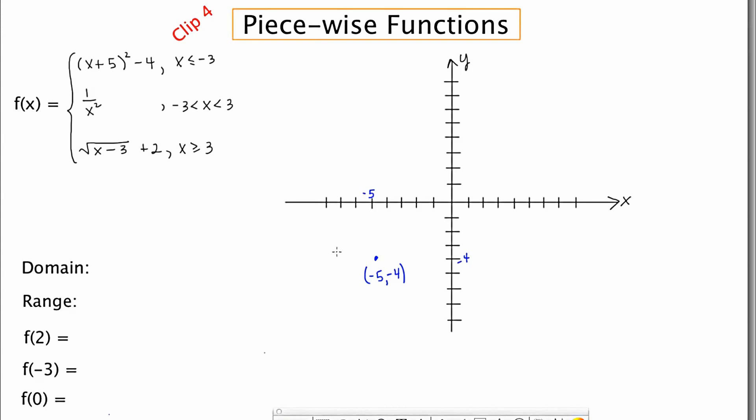Now this parabola opens up, however, it's limited. It's not a parabola in its full entirety because of this restriction. So we're only looking at it for those x's that are less than or equal to negative three. So I'm going to look at when x equals negative three and see what happens. When I plug that in, I get negative three plus five, which is two, two squared is four, and four minus four is zero. So when I plug in negative three, I get zero. And I'm going to make that a closed circle because there's an equal sign there.